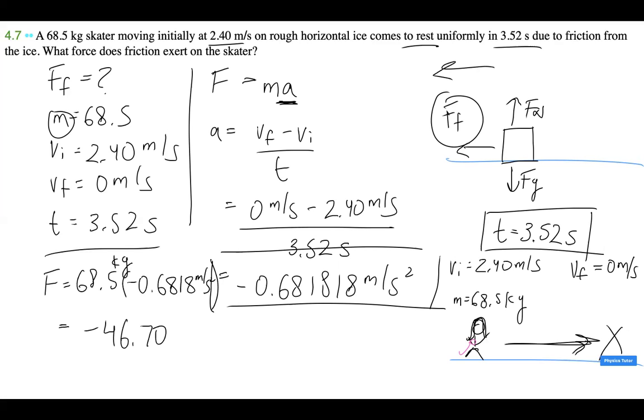That makes sense because we said our force of friction was going to be in the opposite direction as the direction that the skater was skating. So that's -46.70 newtons, and that is our final answer, the force that friction exerts on the skater.